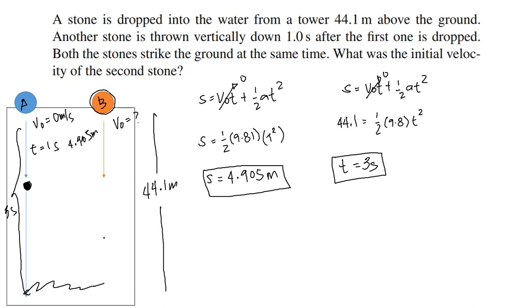The case is that same time sila tumama sa ground. Ibig sabihin may two seconds para pumunta dito si stone A, and also may two seconds para i-travel ito ni stone B. So kung ganun, pwede na natin makompute yung initial velocity niya.